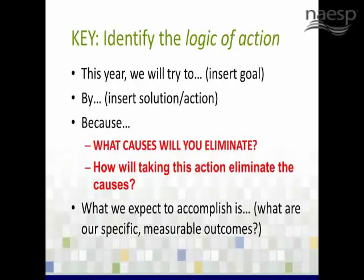Finally, as a last step, when you've identified the root causes you can control and you're starting to transition into identifying solutions, it's important to spell out your logic of action — being explicit about what you're trying to achieve, how you plan to achieve it, and why you believe this is an effective approach. This is a check on your hypotheses or your hunches. Be sure that the solution will, in fact, help eliminate the causes you identified. We work this through with the prompts on the slide: 'This year, we will try to improve the reading achievement of third grade students by [solution or action identified], because [causes you believe you will eliminate or reduce]. What we expect to accomplish is [the observable or measurable outcomes you're seeking through your solution set].'